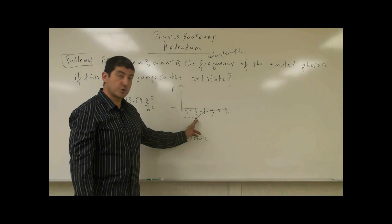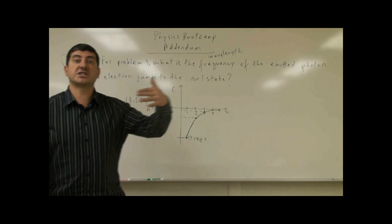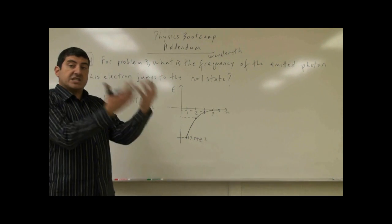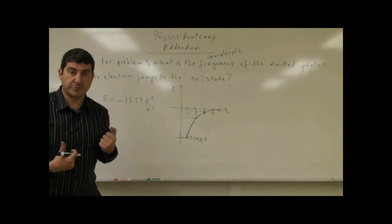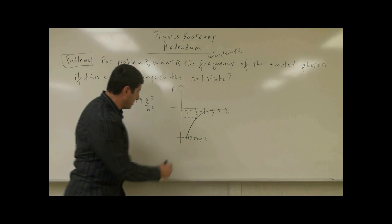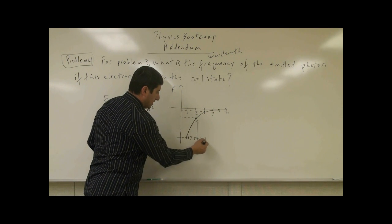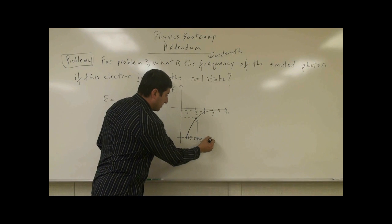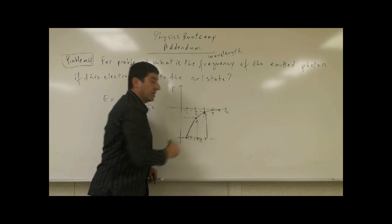When you go from n equals 1 to 2 to 3, your energy is getting higher. When an electron receives energy, that's called absorption — it absorbs energy and jumps from the first state to the second state. If it receives enough energy, it jumps from the first state to the third state.